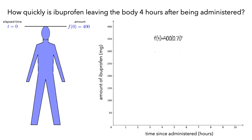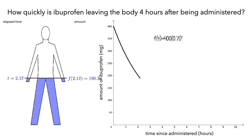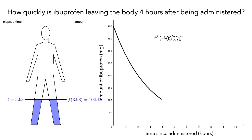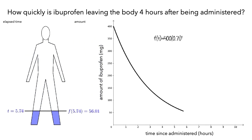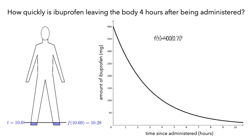Now let's draw the graph of f of t. We see that at 4 hours, the amount of ibuprofen remaining in the body is about 101.6mg. We can also see this on the graph.